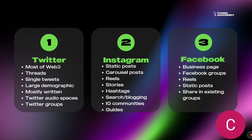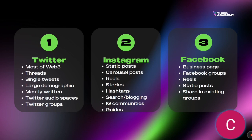On Instagram it's a bit harder to grow initially, but people do still grow there and it's a great place to reach a target audience that uses the platform. You can create static posts, carousel posts that are swipeable, reels like short videos, and post directly to your stories. Make sure to research your hashtags — which hashtags is your target audience most likely to use and follow? Those are the ones you should start using, especially in the beginning.